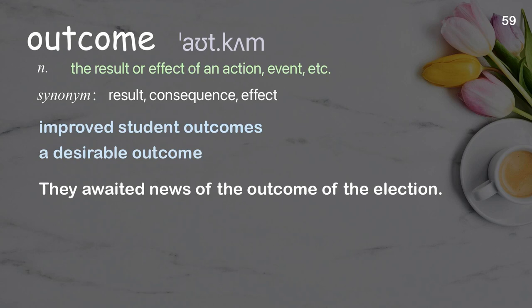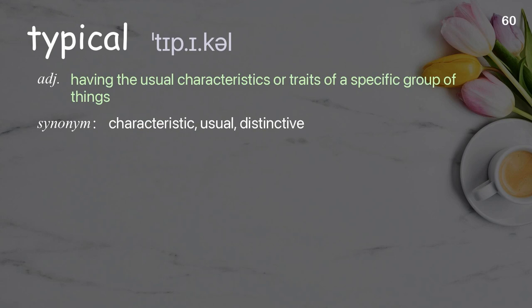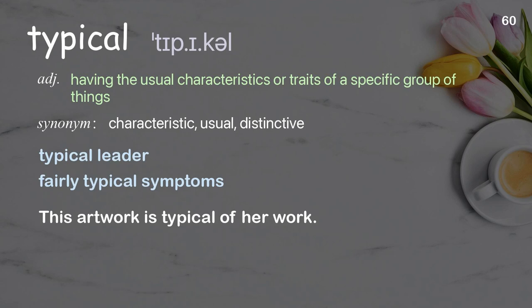Typical: having the usual characteristics or traits of a specific group of things. Examples: typical leader, fairly typical symptoms. This artwork is typical of her work.